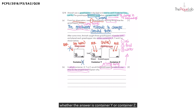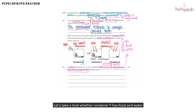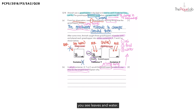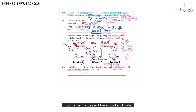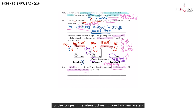Let's now try to figure out whether the answer is container Y or container Z. The other two things the grasshopper needs are food and water. If you look at the diagram for container Y, you see leaves and water. Amina placed leaves in the container because leaves are actually the food for the grasshopper. So the grasshopper in container Y has food and water. But the grasshopper in container Z does not have food and water. So the grasshopper in container Y is the one that would stay alive for the longest time.